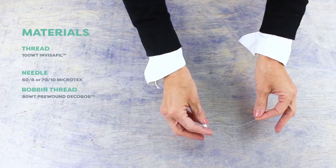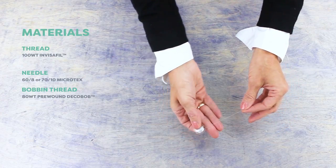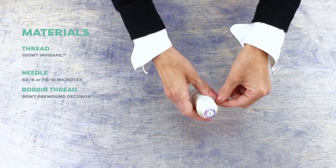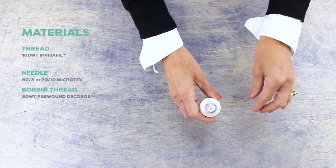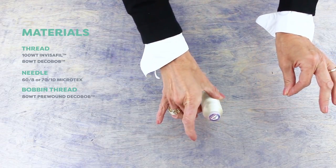You can also wind your own bobbin with Invisifil thread. Just remember to wind it slowly since the thin thread tends to float away. If you're going to hem your fabric on a serger, obviously you won't use a bobbin so you'll want to use a DecoBob spool for your lower loopers.